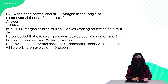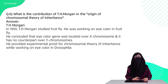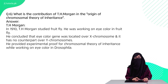Question 6 is: what is the contribution of T.H. Morgan in the origin of the chromosomal theory of inheritance? T.H. Morgan was the first scientist who discovered gene linkage and the location of genes on chromosomes. He also studied X chromosomes, which are sex-linked chromosomes, and their role in determining sex-linked characters.